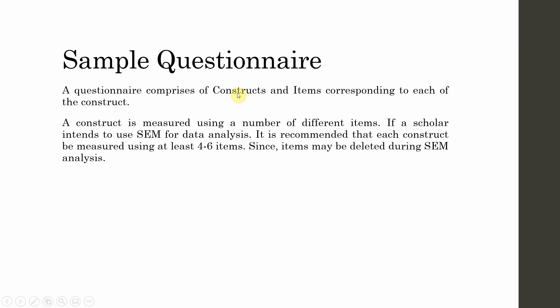That construct is actually a latent variable because it is unmeasurable. The construct is manifested, measured, or operationalized using different items. Those different items are used in SEM analysis. It is always recommended that when using SEM, make sure that when you are drafting your questionnaire each construct is measured using 4 to 6 items. The reason for this is that a number of items may be deleted during SEM analysis.